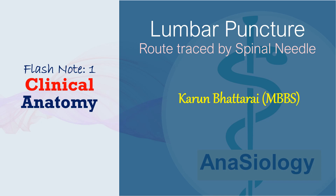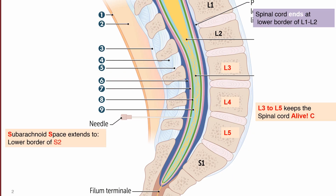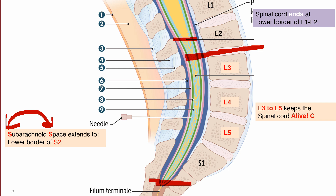Before starting our proper topic, I need to give a certain overview regarding the course of the spinal cord in the vertebral column. In the adult, the spinal cord gets terminated at the lower border of the second lumbar vertebra. The subarachnoid space — note there are two S's in subarachnoid, just as a memory aid — extends up to the lower border of the second sacral vertebra.